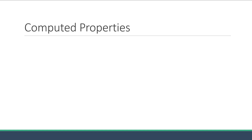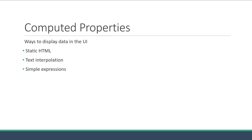Welcome back everyone. In this video, we are going to learn about computed properties in Vue. So far, we have learned quite a few ways to display data in the UI. You can have static HTML, you can bind data properties using text interpolation, you can have simple expressions inside the mustache syntax, and you can also call methods which return values that can be rendered in the browser. To add to this list, we have computed properties.